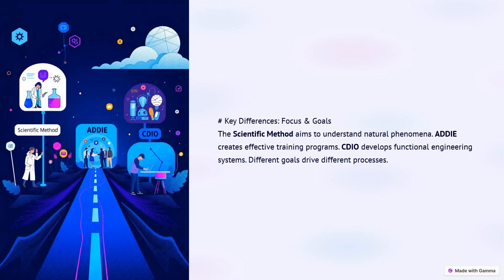Each method serves a different purpose. The scientific method is focused on understanding natural phenomena, with applications in research and discovery. ADDIE is focused on creating effective training programs, with applications in education and workforce training. CDIO is focused on developing functional engineering systems, with applications in engineering design and product development. Understanding these differences helps to select the right approach for different challenges.